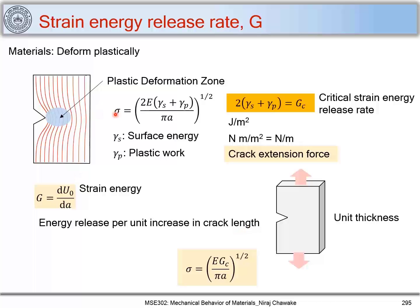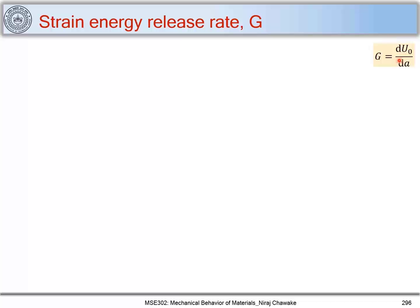We can write the relation: sigma = (E·G_C / pi·a)^(1/2). To understand plastic materials in terms of fracture mechanics, we need gamma_S and gamma_P — in other words, we need to find G. We will be doing that in subsequent slides. We know G = dU₀/dA.